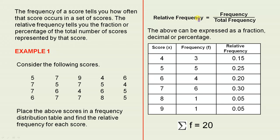So in order to calculate the relative frequency, we have frequency over total frequency. The above can be expressed as a fraction, decimal or percentage. So let's have a look at this example, which will explain it fully.